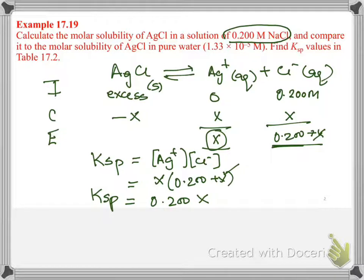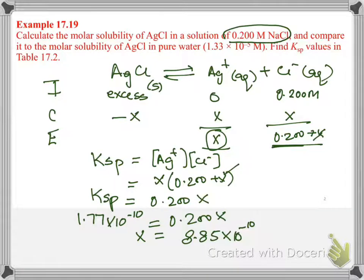Now, this KSP value from table 17.2 it is 1.77 times 10 to the negative 10th equals 0.200 X. And we will find X will come out as 8.85 times 10 to the negative 10th molar.